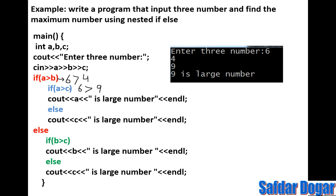What is the result of this condition? It is false. The first condition was true but this inner condition becomes false. So we move to the else branch. What is written in the else? C, meaning 9, is the largest number.